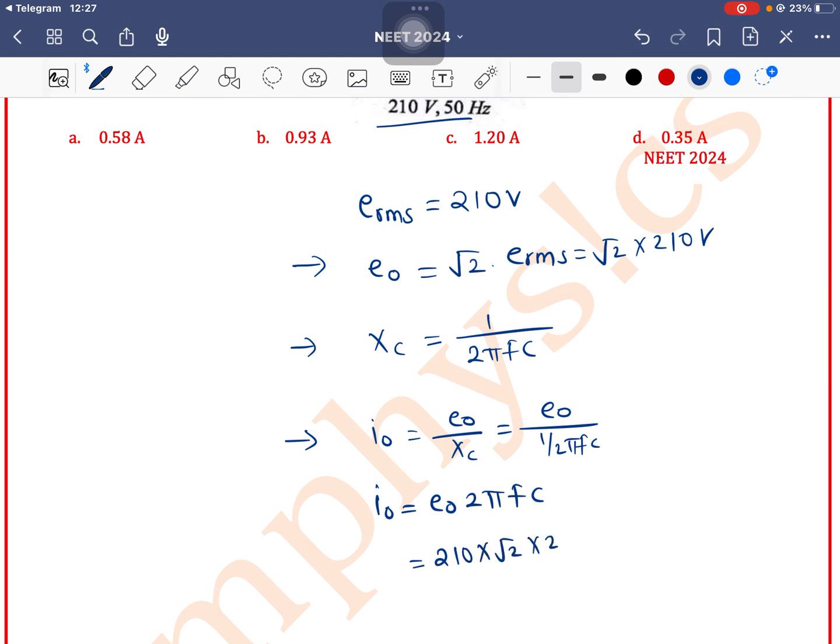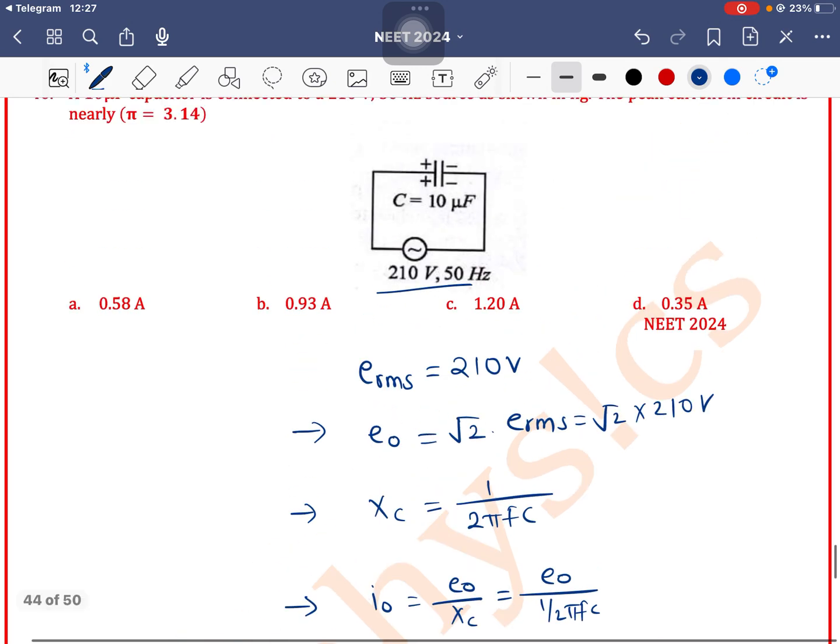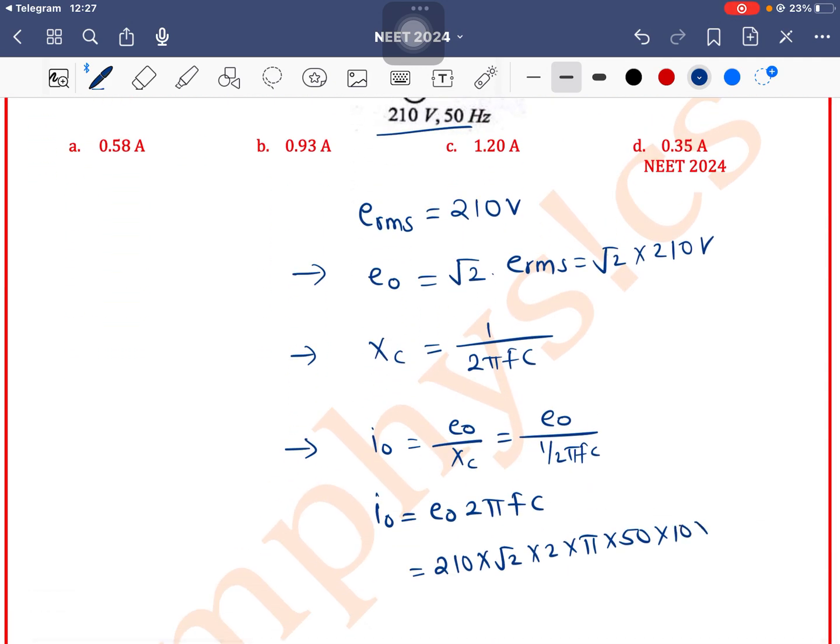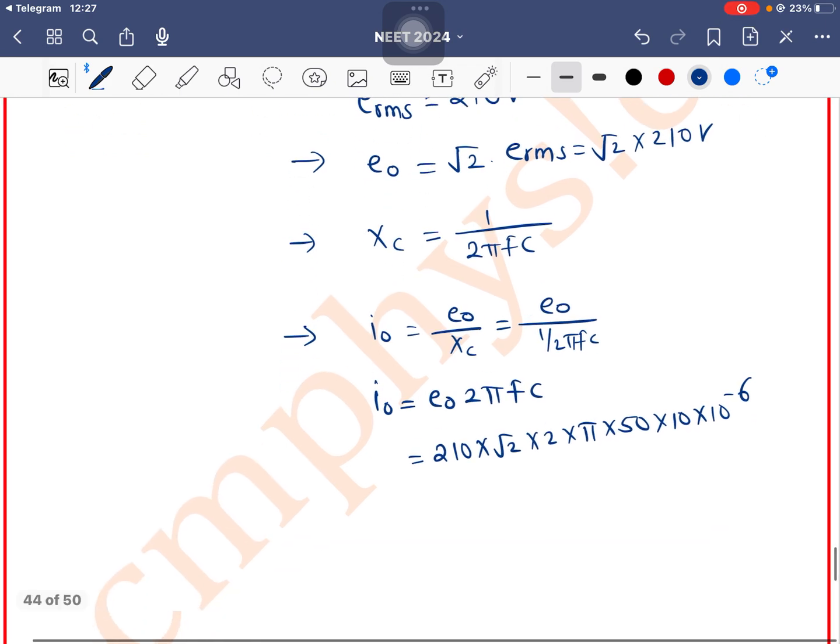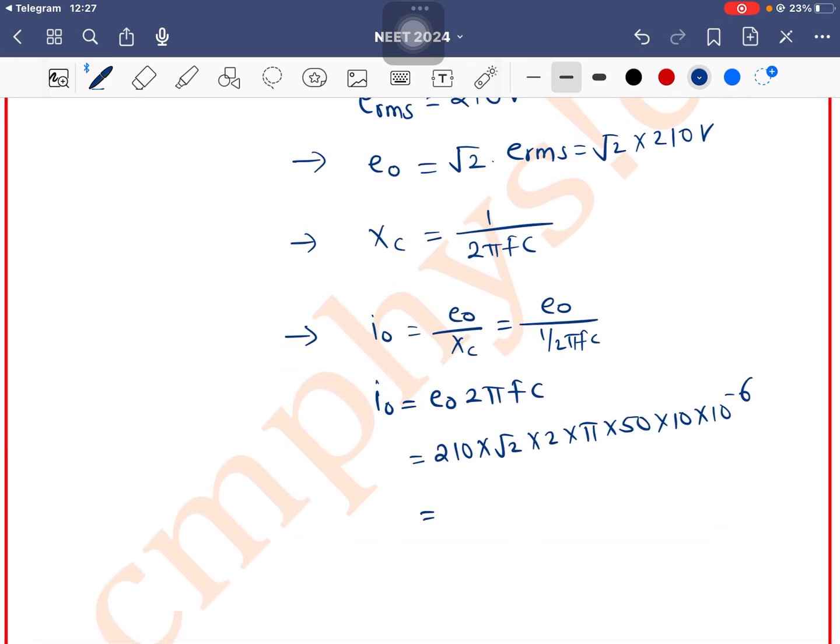E0 is 210 into root 2 into 2 into pi into frequency is 50 and C is 10 microfarad means 10 into 10 to the power minus 6.